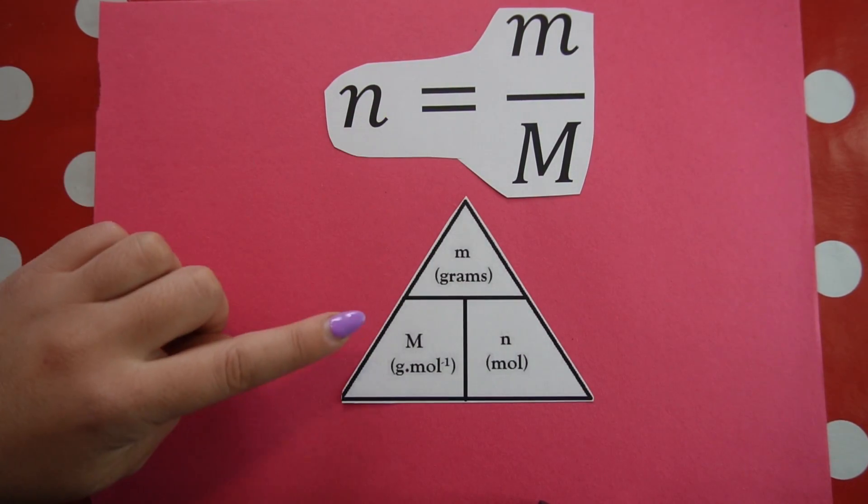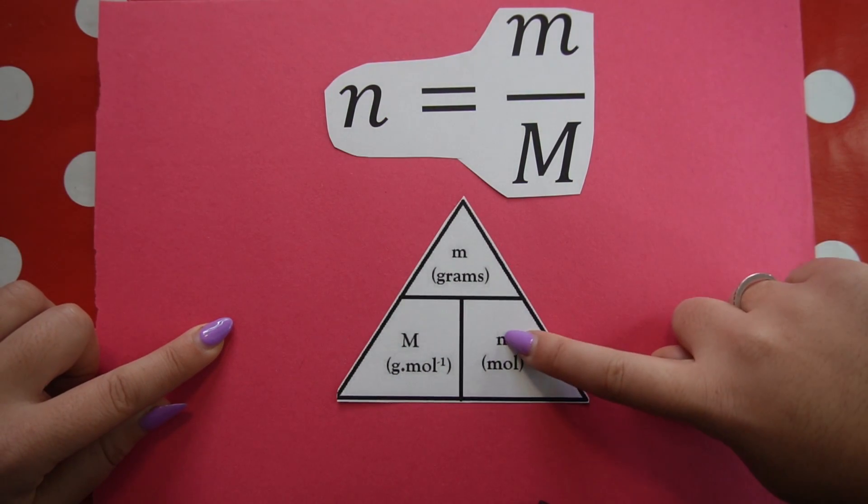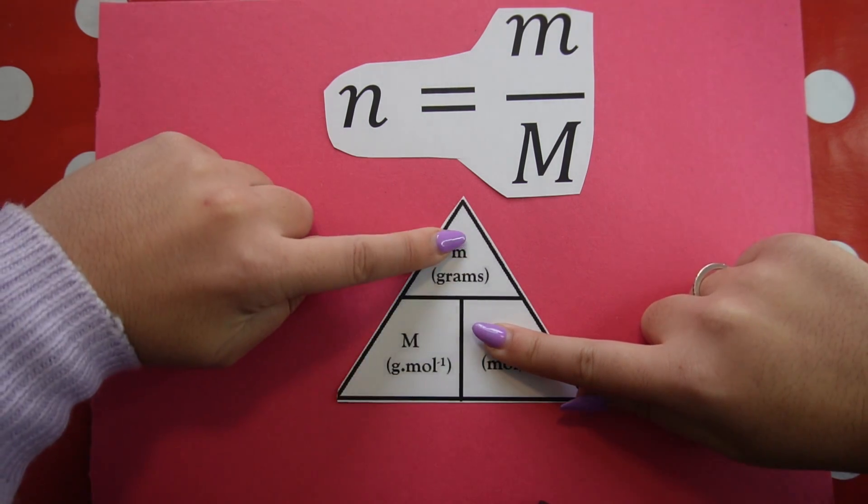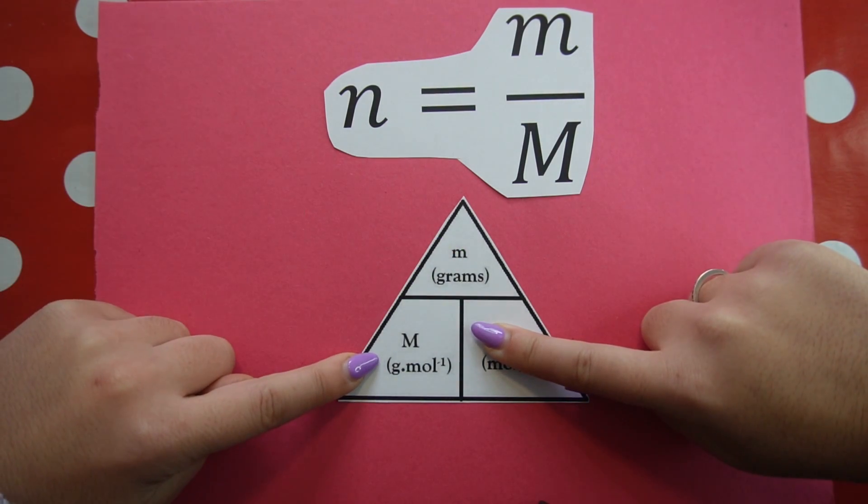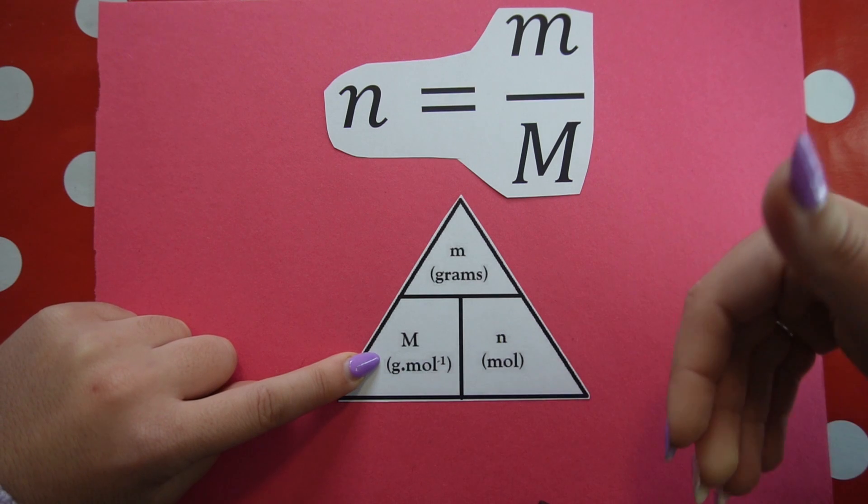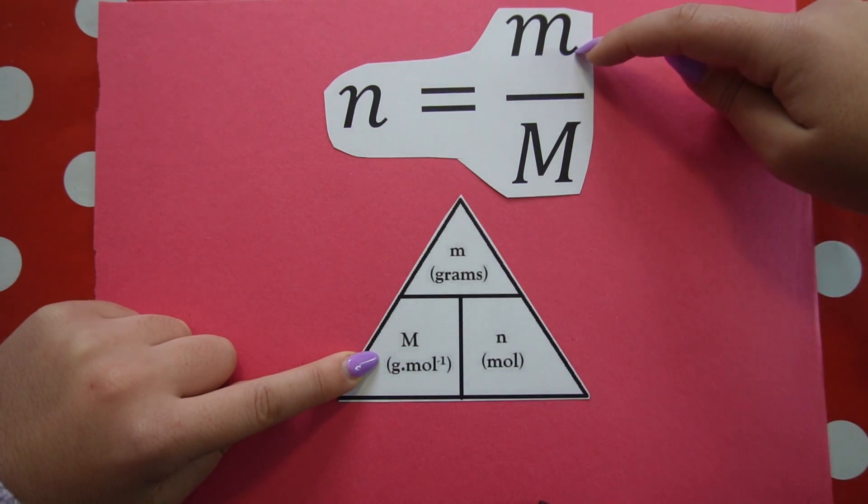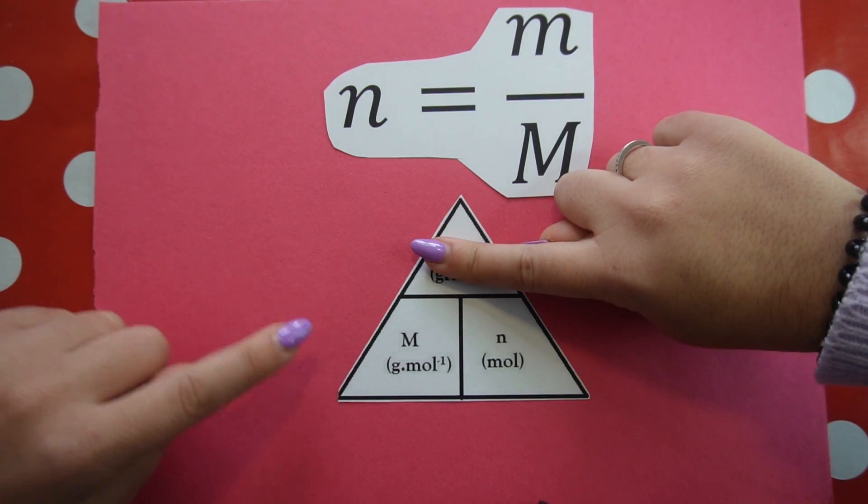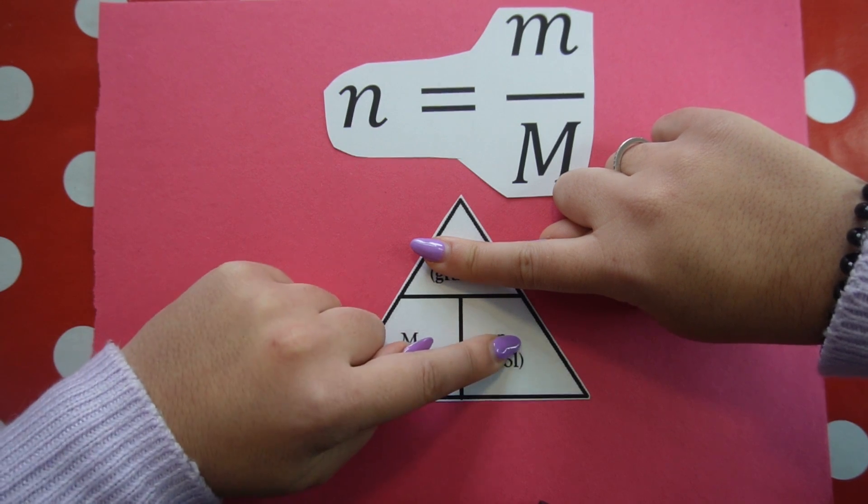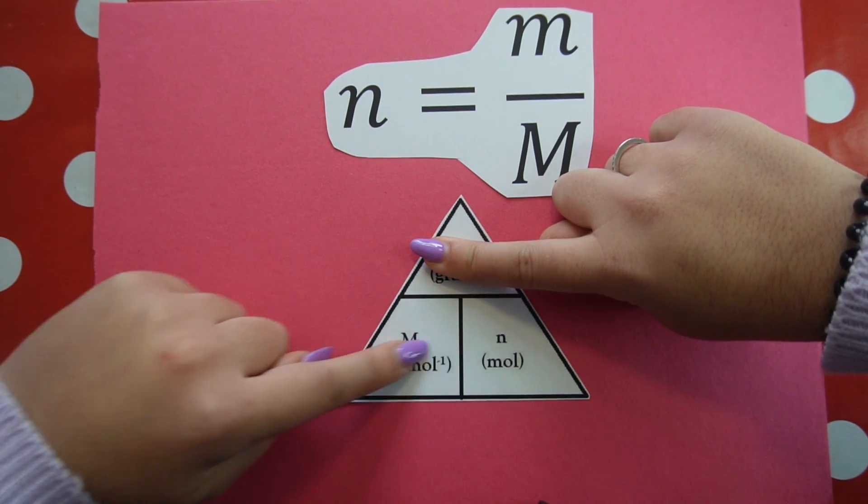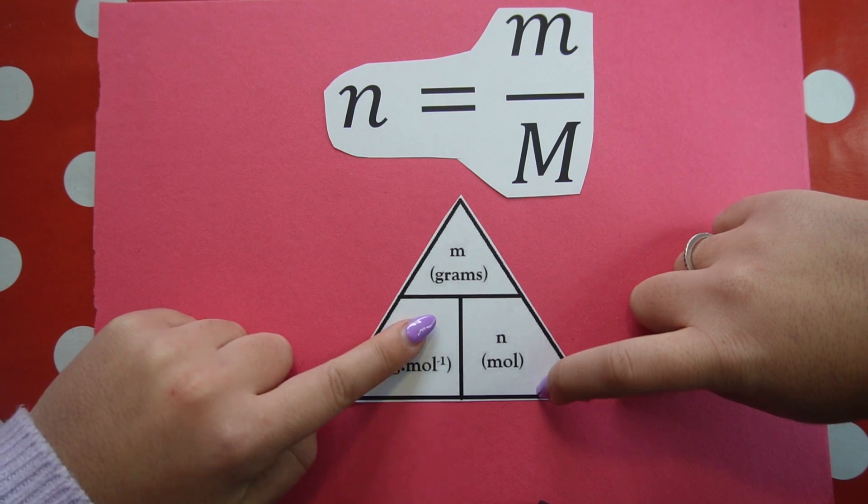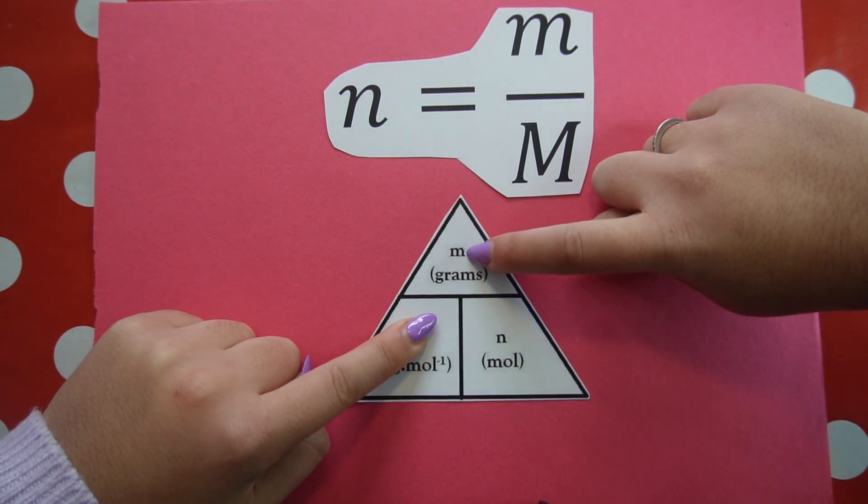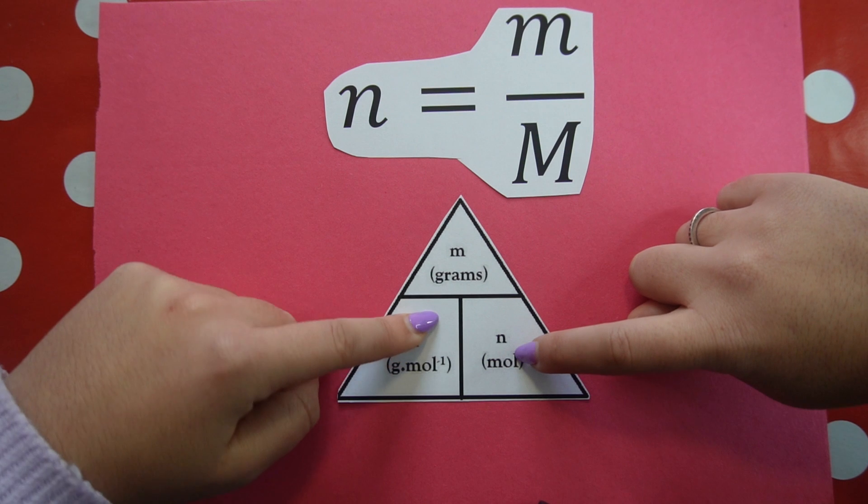You can also represent this formula by using a triangle. Number of moles, block it out, is equal to mass, baby M, divided by molar mass. If I wanted to work out the baby M, the mass in grams, block it out, that's equal to molar mass multiplied by N. So this way is multiply. If I want to work out the molar mass, block it out, it's equal to mass divided by number of moles.